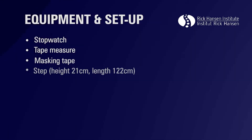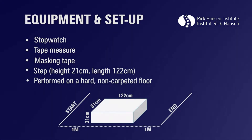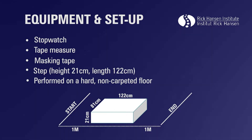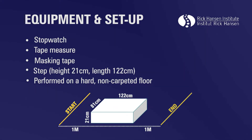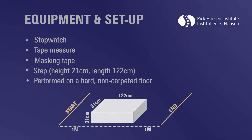To complete the step task, you will need a step that has a height of about 21 centimeters and a length of about 122 centimeters. This task is performed on a hard, non-carpeted floor. Two pieces of masking tape are placed on the floor to indicate the start and end points. The starting line, which is one meter in length, is placed one meter in front of the step. A second smaller piece of tape is placed one meter behind the step to mark the end point.